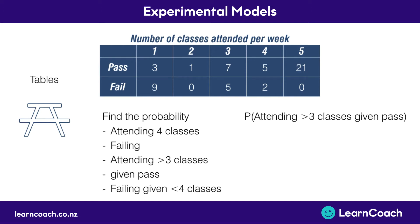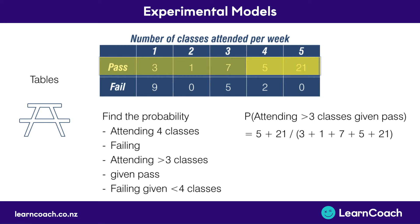Now if we find the probability of attending more than three classes given they have passed, we look at the passed row and see how many were above 3. It's important not to include the third column, because the question wants more than three classes, not including three. So we add 5 and 21 and divide by the total of those who passed: 26 divided by 37, which equals 0.702.